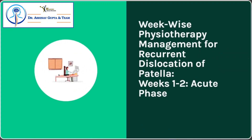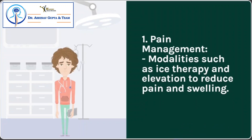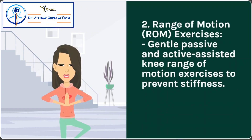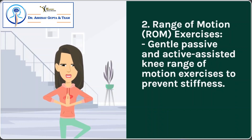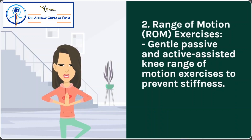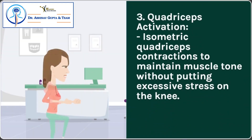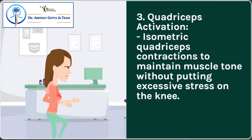Week-wise physiotherapy management for recurrent dislocation of patella – Weeks 1 to 2 (Acute Phase): 1. Pain management – modalities such as ice therapy and elevation to reduce pain and swelling. 2. Range of motion exercises – gentle passive and active-assisted knee range of motion exercises to prevent stiffness. 3. Quadriceps activation – isometric quadriceps contractions to maintain muscle tone without putting excessive stress on the knee.